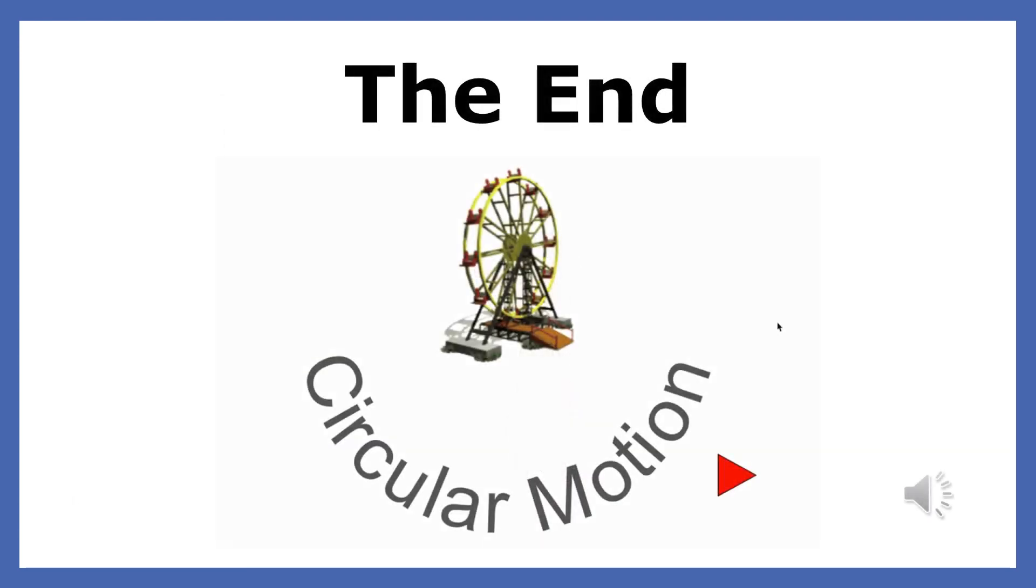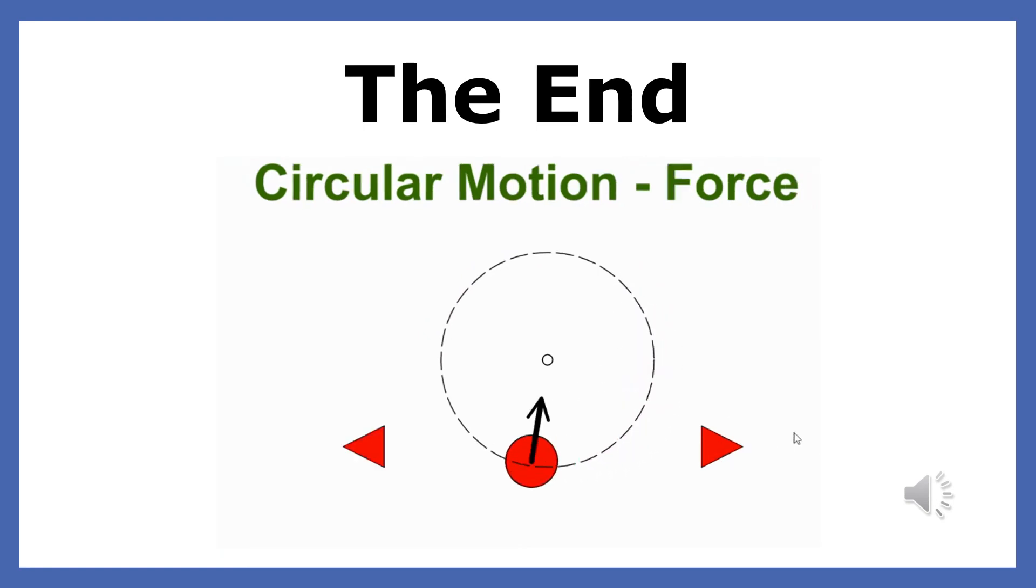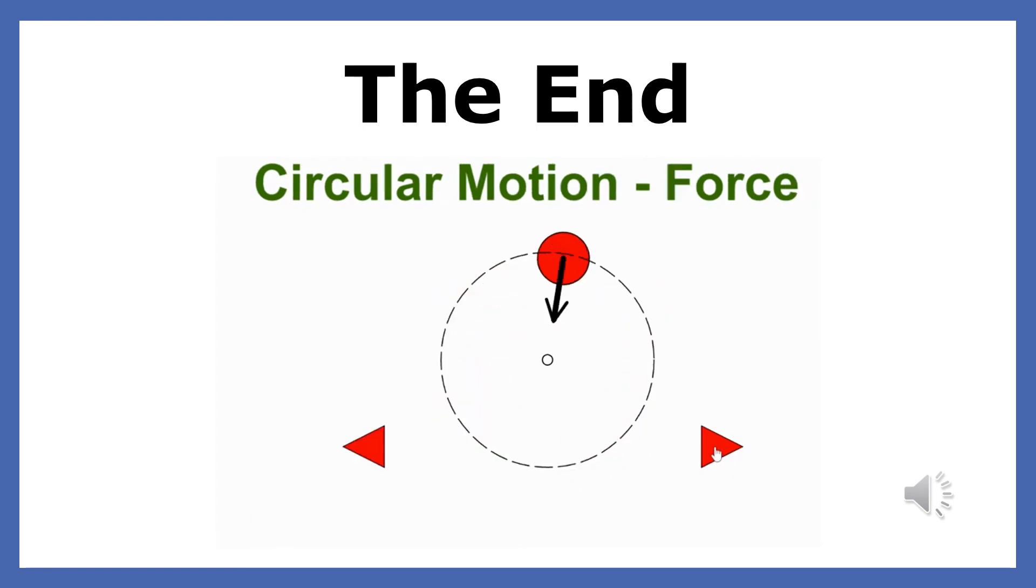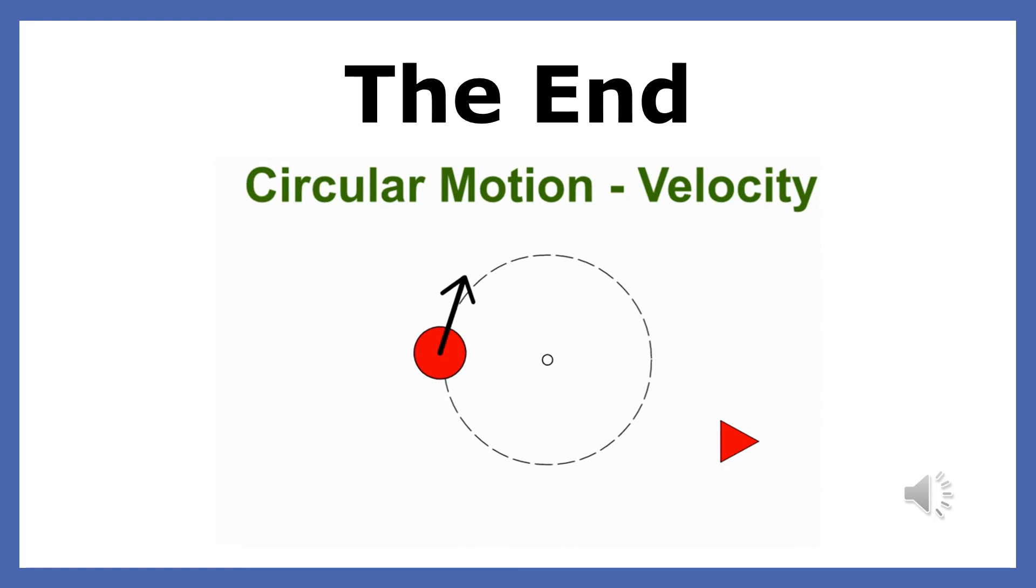In this presentation, you learned that in order for an object to move at constant speed in a circle, it needs a centripetal force. A centripetal force is a force directed towards the center of the circular path that changes only the direction of the object. The centripetal force is always perpendicular to the velocity of the object. While the speed of the object is constant, the velocity of the object always changes due to a change in direction.